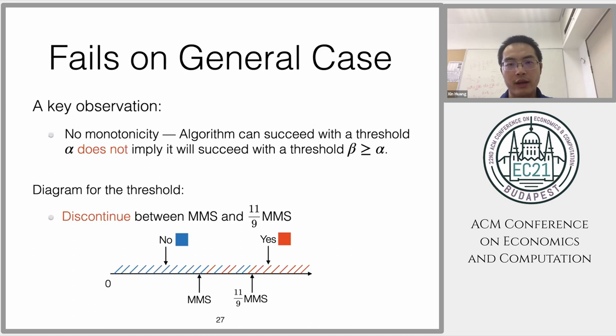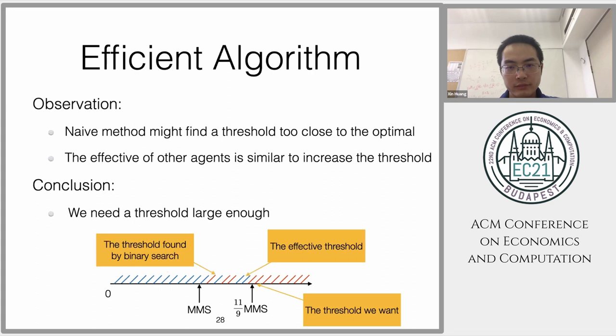This gives us an observation: if you do binary search, below the maximum share it will return no, and above 11/9 it will return yes. Between them, it can be discontinuous. With the general case, we can find a threshold that will allocate all the chores, but with different valuations, the effective threshold may be increased to something that doesn't work.